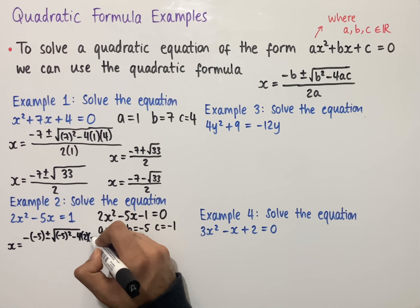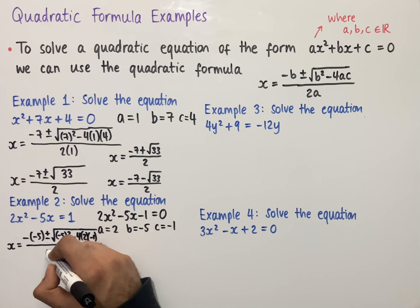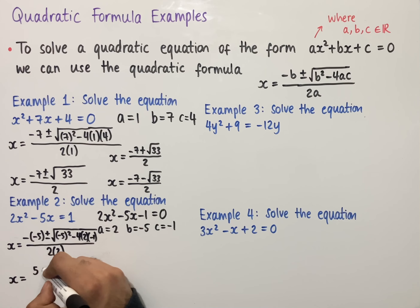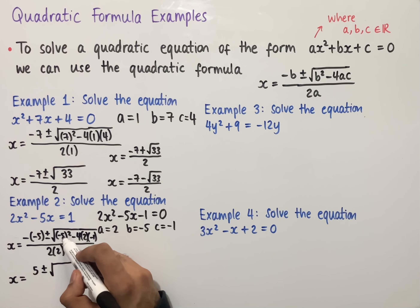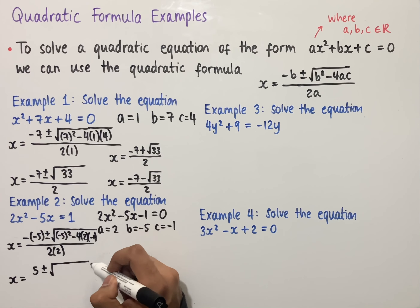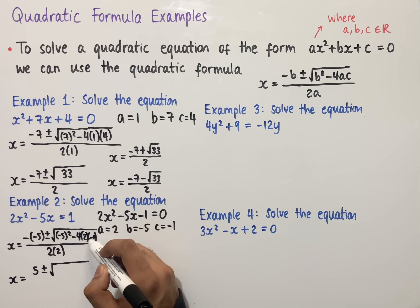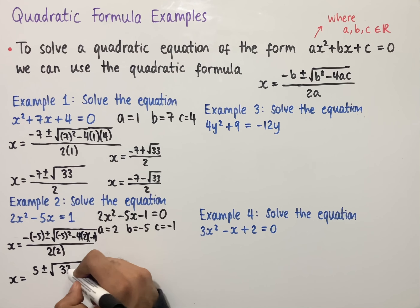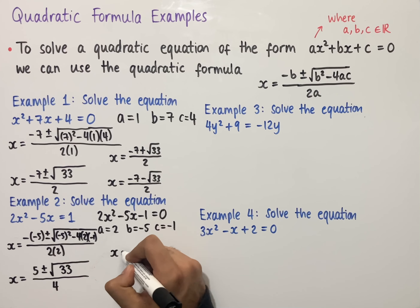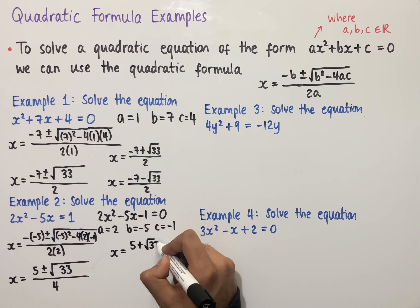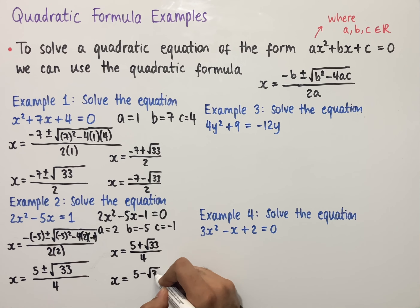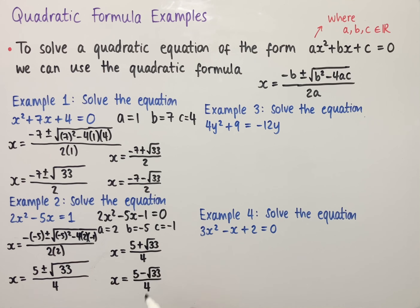Substituting into the quadratic formula, we get x equals minus b, so that's minus minus 5, plus or minus the square root of b², so that's minus 5 all squared, minus 4 times a times c, so that's times 2 times minus 1, all over 2a, which is 2 times 2. Simplifying, minus minus 5 gives us plus 5, and inside the square root: minus 5 all squared is 25, minus 4 times 2 times minus 1 — so minus 8 times minus 1 is plus 8 — gives us 33, all over 4.